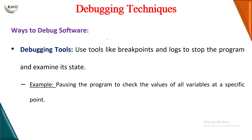The last debugging technique is using debugging tools — tools that pause the program so you can examine it. For example, in Turbo C editor you can press F7 for debugging, which pauses the program so you can check line by line. In Eclipse IDE you can give breakpoints so you can stop at a particular line and check if that statement is working correctly. These are the various debugging techniques: brute force, backtracking, cause elimination, print statements, and debugging tools.